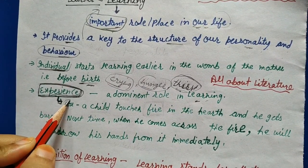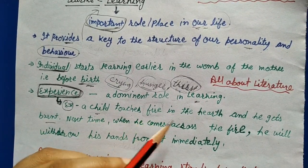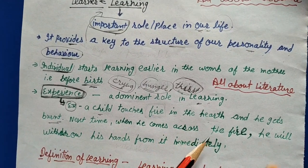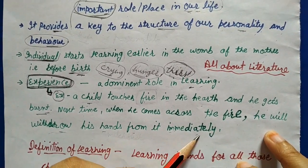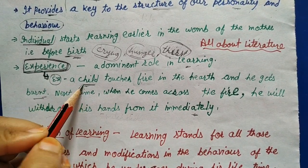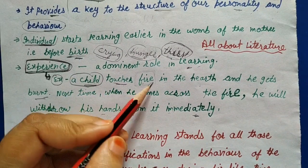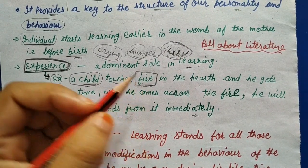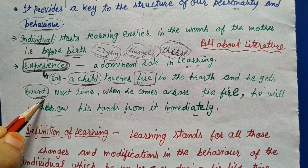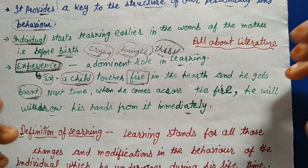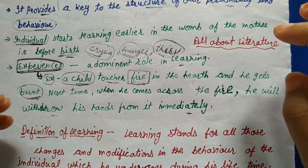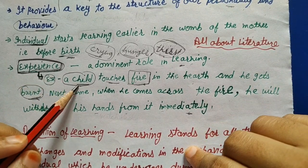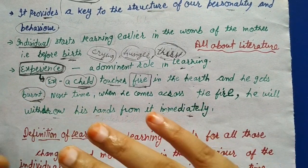For example, a child touches fire for the first time and gets burned. The next time he comes across fire, he will withdraw his hands immediately. From that experience, he learns not to touch fire again. So experience teaches us — that is learning in action.